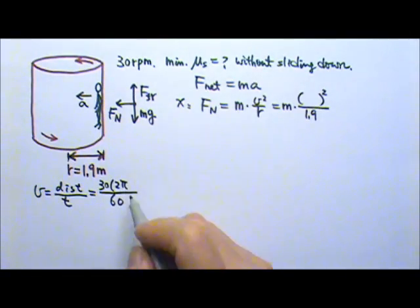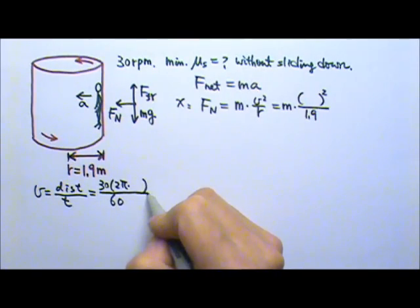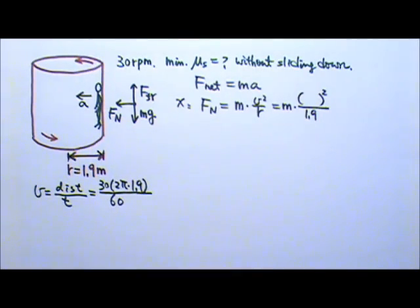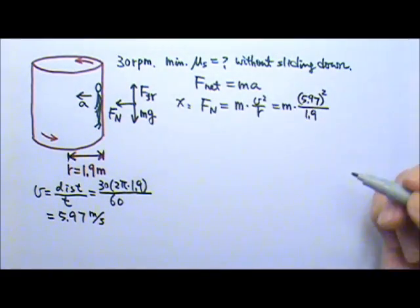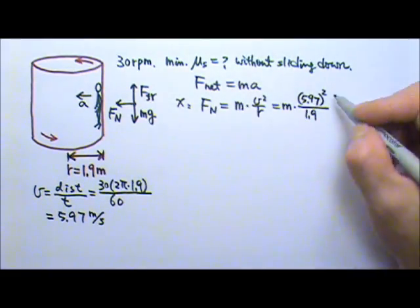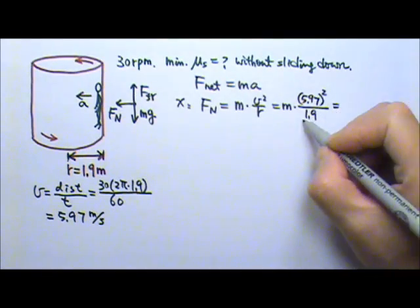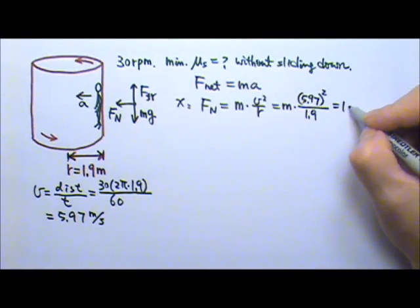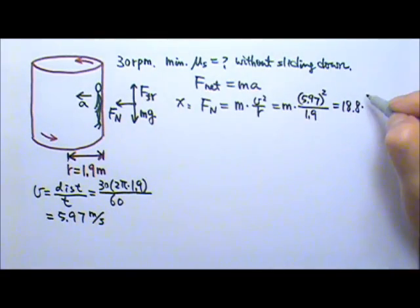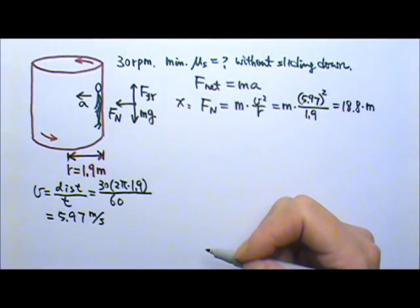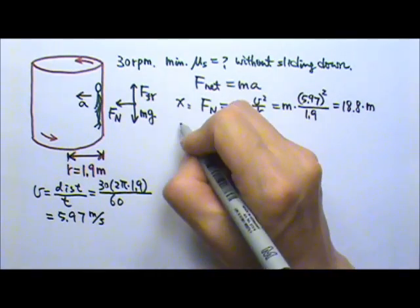And the r is 1.9 meters. This gives us a speed that's 5.97 meters per second. So that's where we put the speed, 5.97. And that means this part here is 18.8. So it would be M times 18.8 or 18.8 times M. That's the x direction.